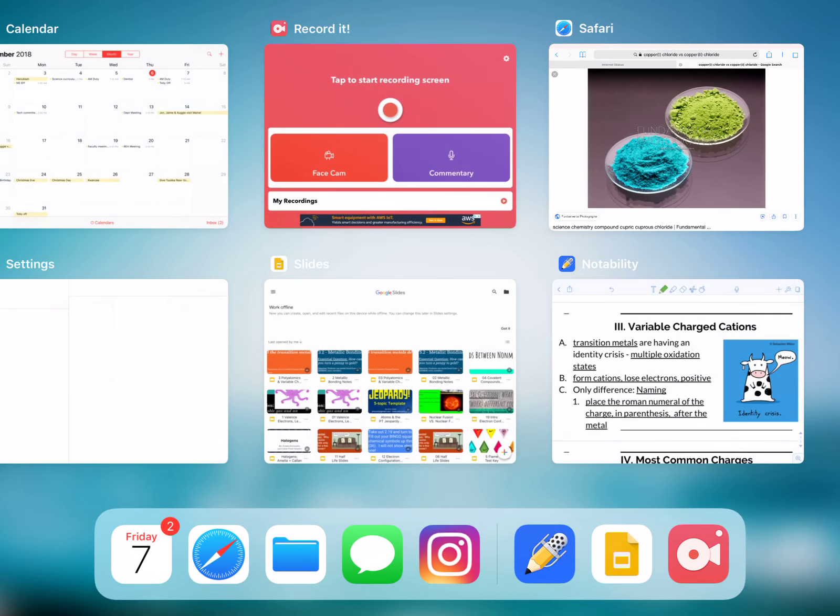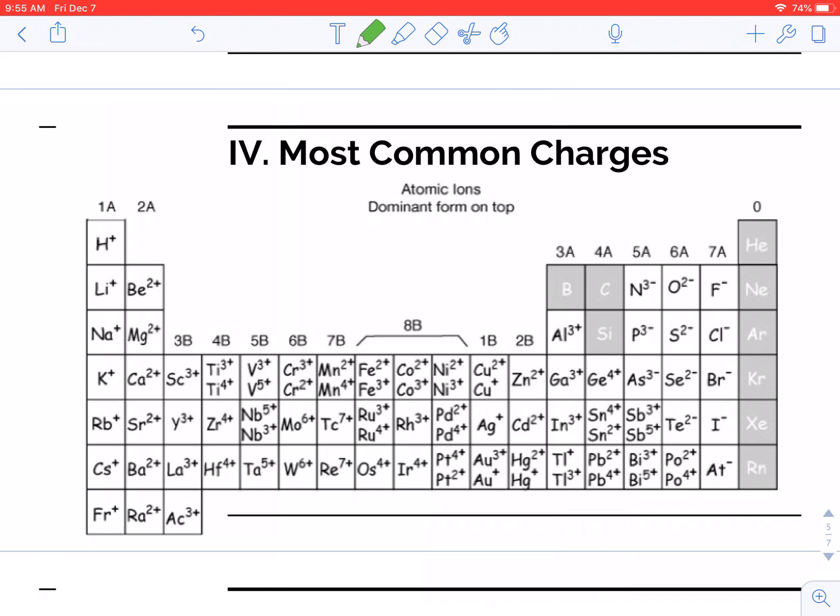So, look down here. This is the next page in your packet, but it really just has the common charges of all these different ions. As you can see, it's the transition metals, and even some of the post-transition metals will have variable charges as well.